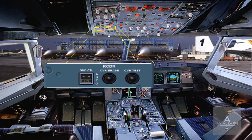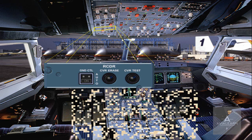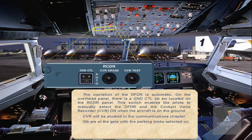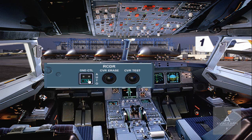We are at the gate with the parking brake selected ON. Switch the DFDR ON. A blue ON light appears, informing you that the DFDR is energized. This light will automatically extinguish as soon as the first engine is started, because the DFDR will revert to AUTO mode and will operate continuously until 5 minutes after both engines are shut down.